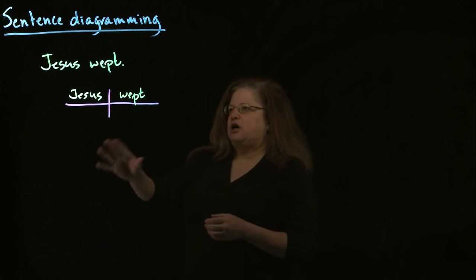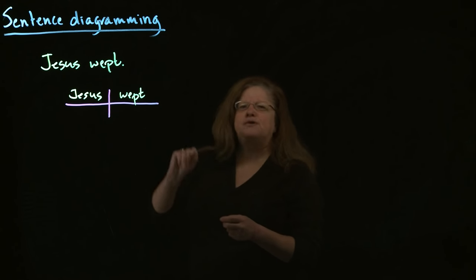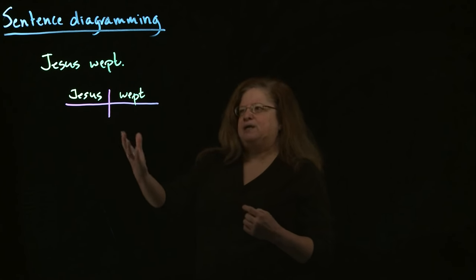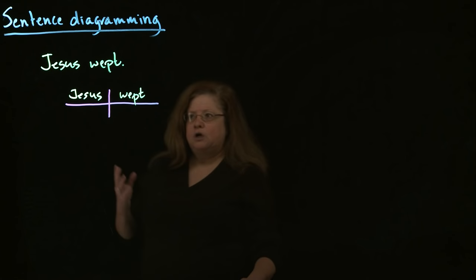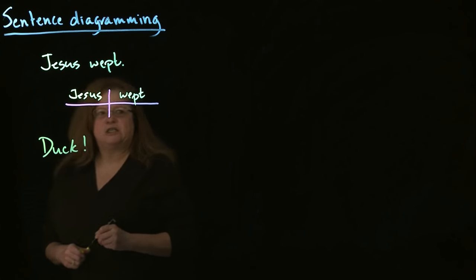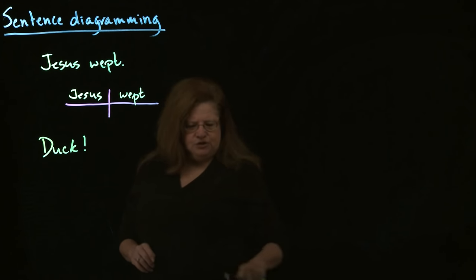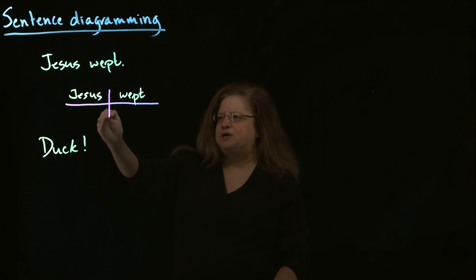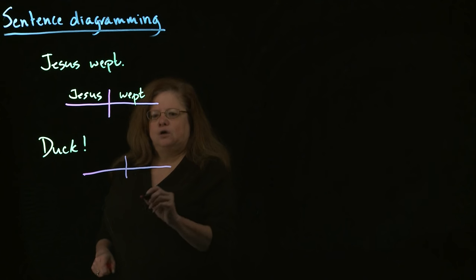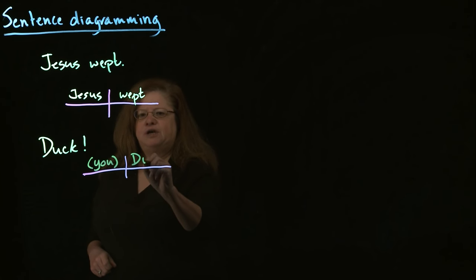Most sentences in English are going to have a subject and a verb. Sometimes you can get away with leaving the subject out — not very often, but once in a while. For example, if you're issuing a command, the implied subject is "you." So if I have the sentence "duck," that is a complete sentence. The subject is implied — it's whoever is being spoken to, whoever is being yelled at to duck. So our subject is the implied "you," and our verb is "duck."